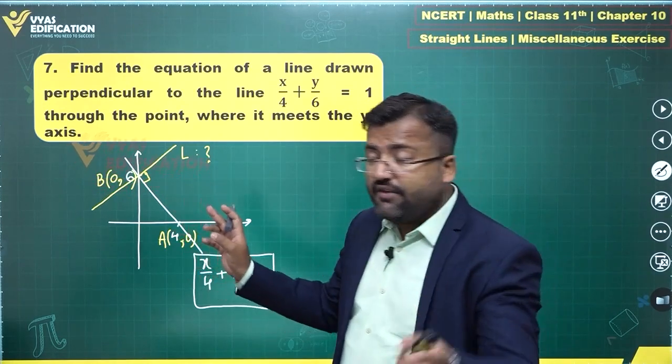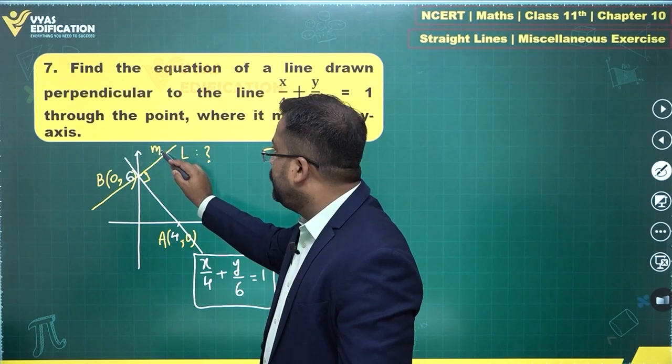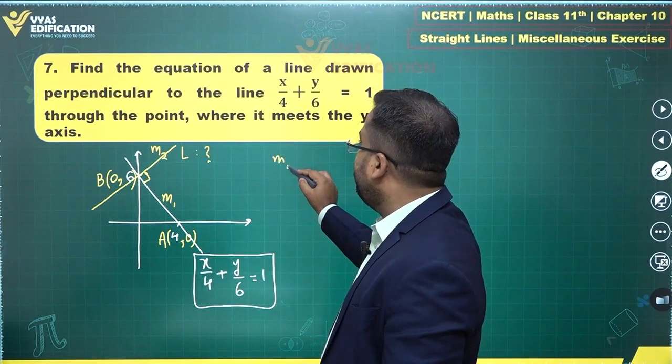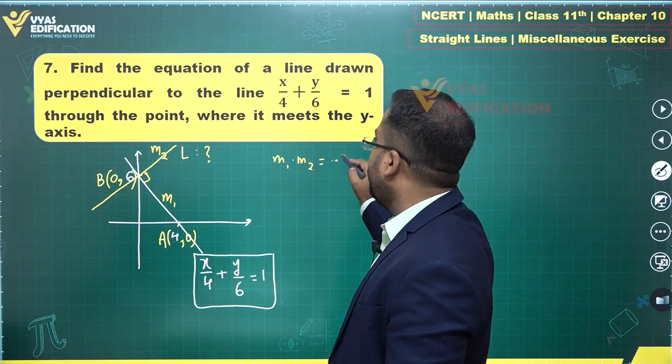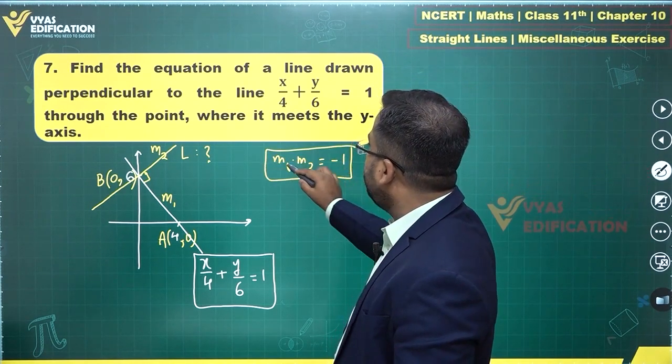The other condition is given in terms of slope. If this slope is m2 and this slope is m1, then we know that m1 × m2 = -1. What is m1 equal to? What is m1 equal to first of all?